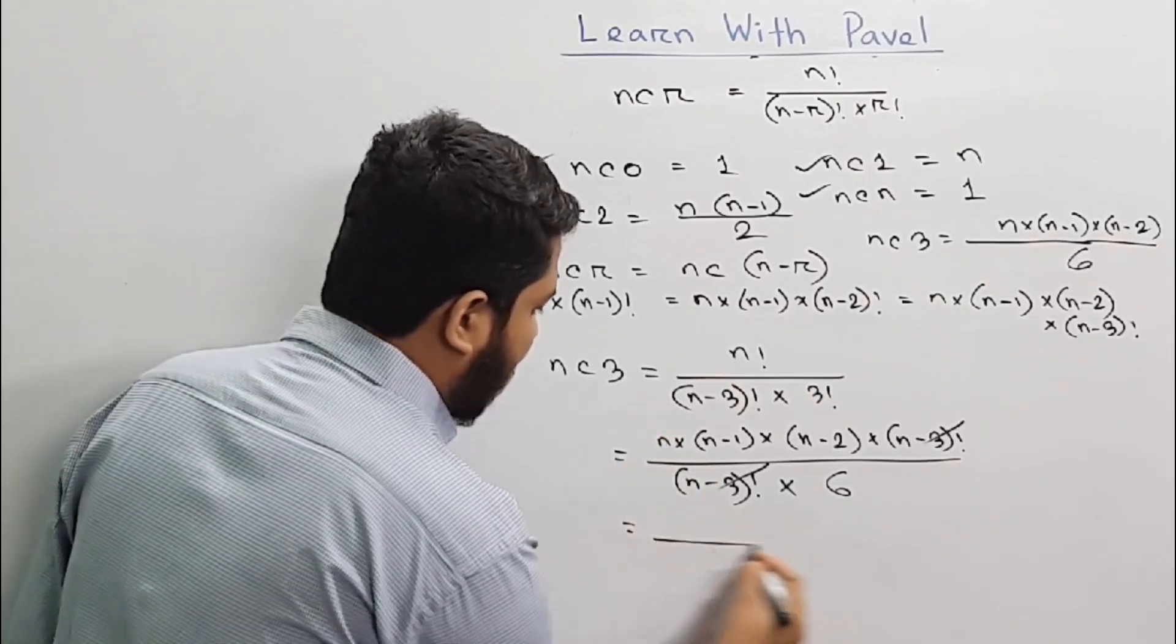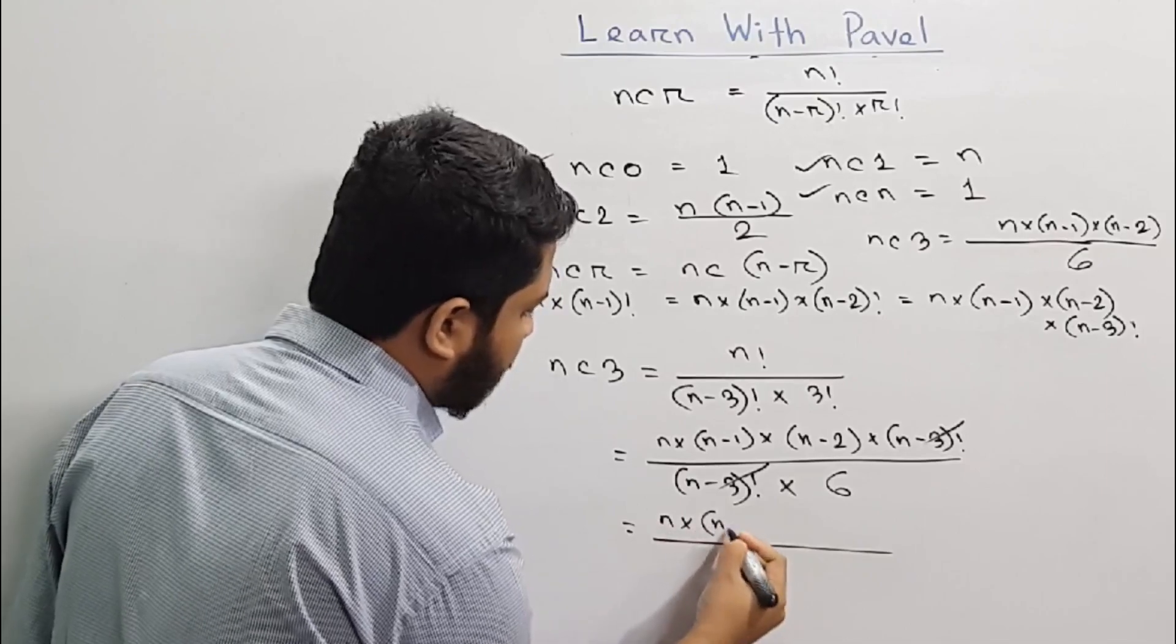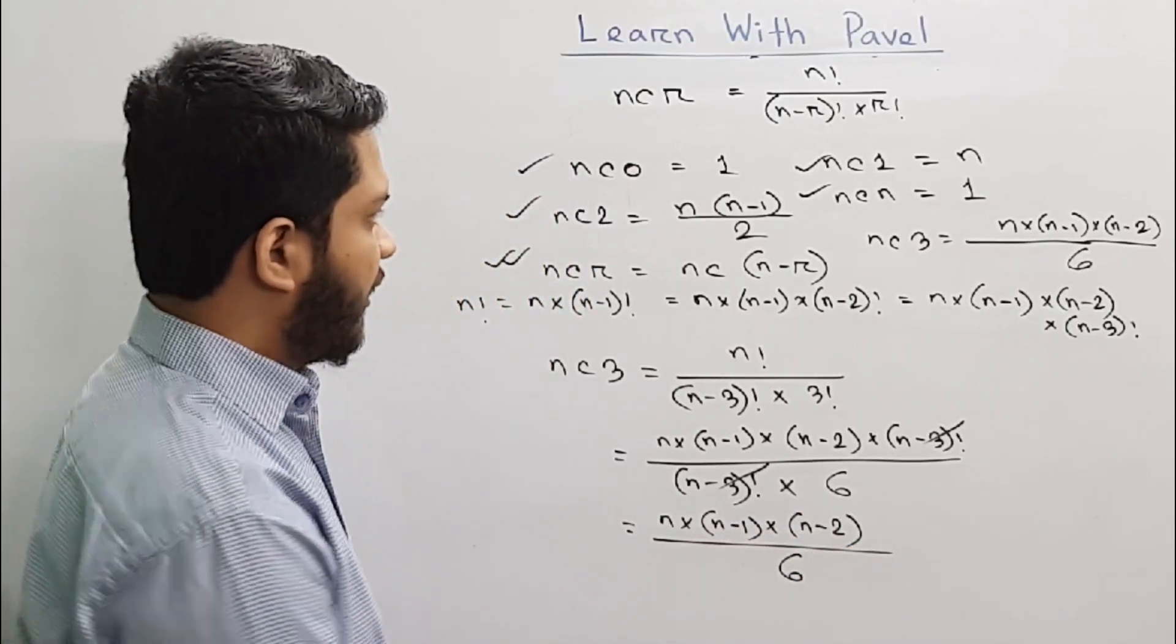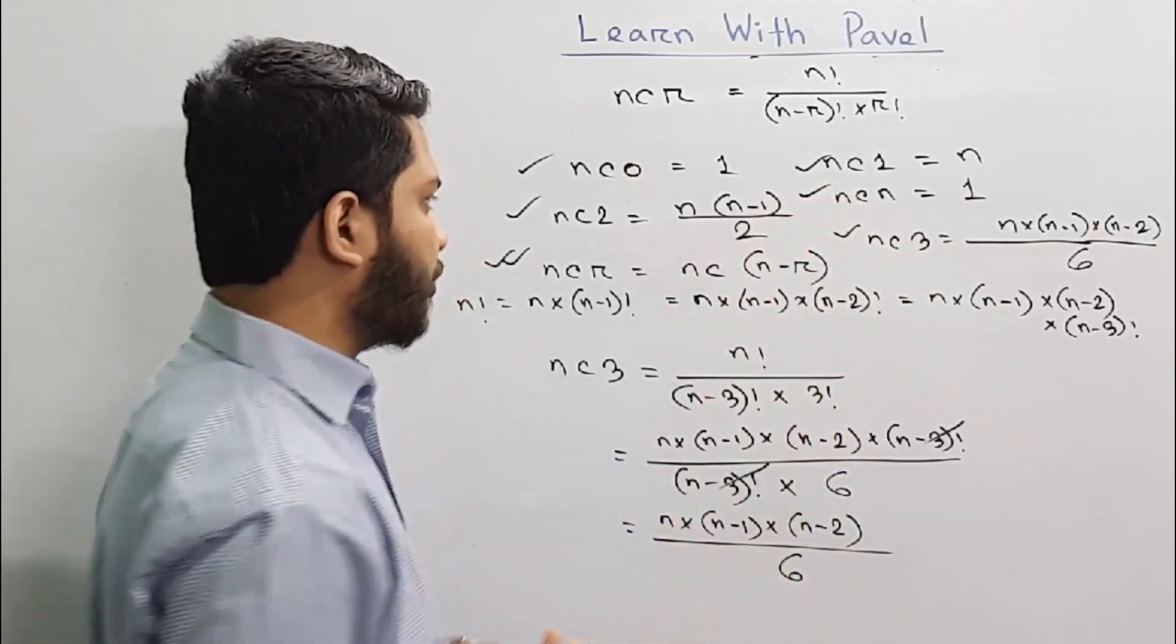So this is n times n minus 1 times n minus 2 divided by 6. So this is the formula.